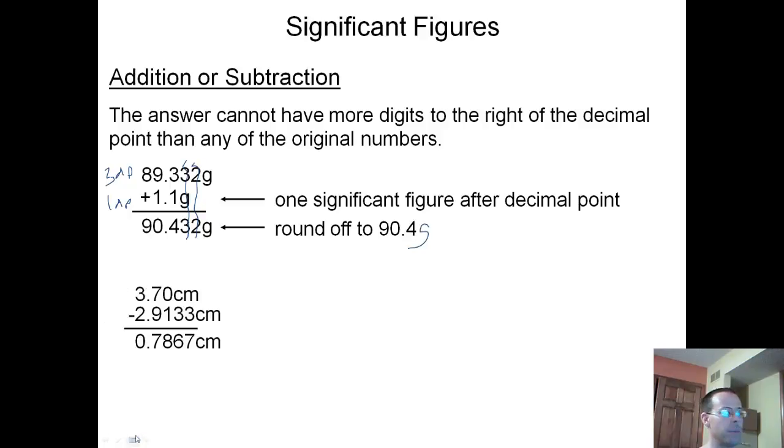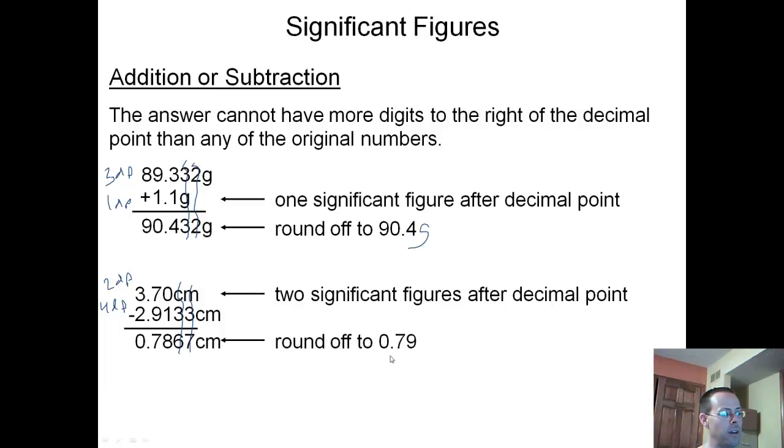Our next example is subtraction. We have 3.70 centimeters, which has two decimal places, and 2.9133 centimeters, which has four decimal places. Which one has less? Our top one. If we line our decimals up, these don't count, this does. However, once we look at our calculator and get an answer, this 8, if we look at the number after it, is a 6, so it's really going to round that 8 up. Even though we don't count this number, it will still be considered with rounding. So we have 0.79 centimeters.